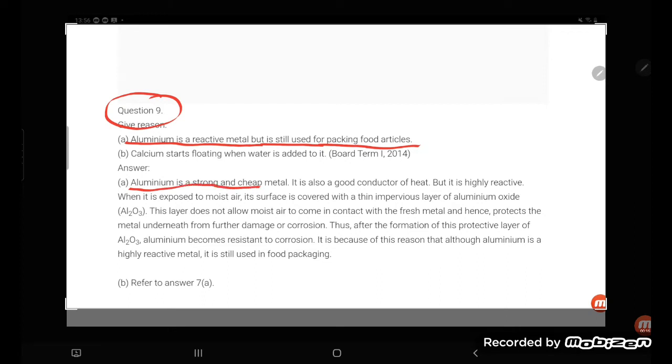Aluminium is a strong and cheap metal. It is also a good conductor of heat, but it is highly reactive when exposed to moist air.